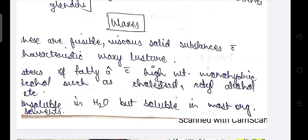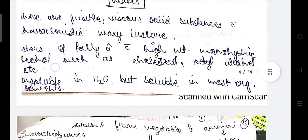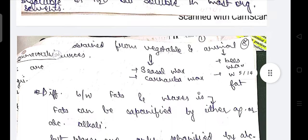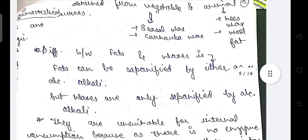Waxes are fusible, viscous solid substances with a waxy texture or lustre. They are esters of fatty acids with high molecular weight monohydric alcohols such as cholesterol and cetyl alcohol. They are insoluble in water but soluble in most organic solvents. They are obtained from vegetable sources — sisal wax, carnauba wax — and animal sources — beeswax and wool fat.